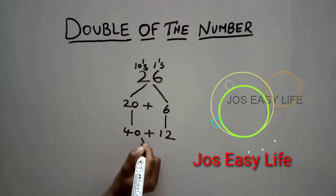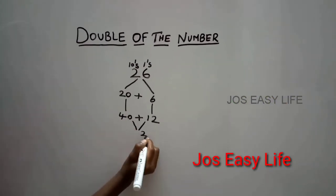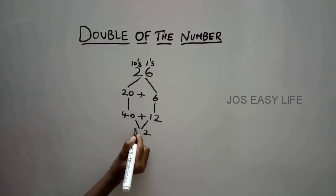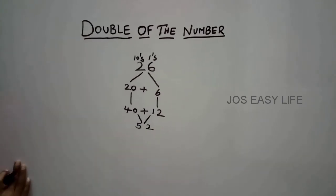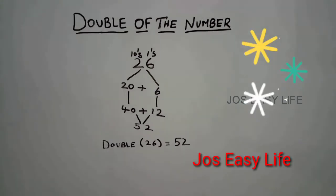Add these numbers. 2 plus 0 is 2, and 1 plus 4 is 5. 40 plus 12 is 52. So, double of 26 is 52.